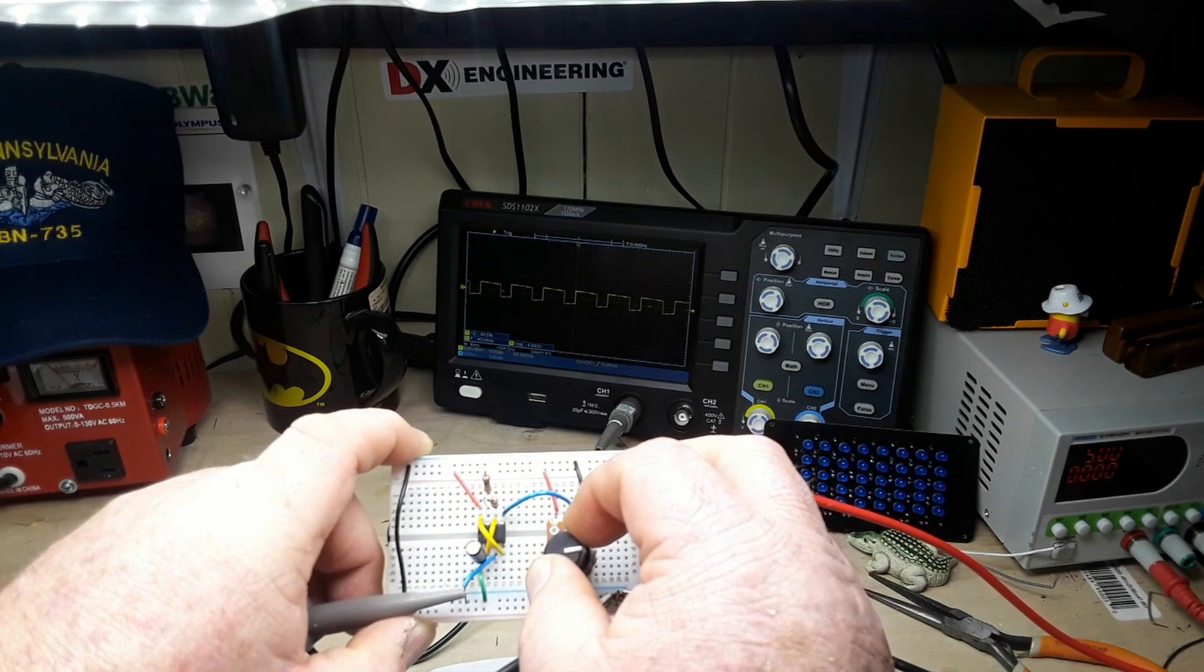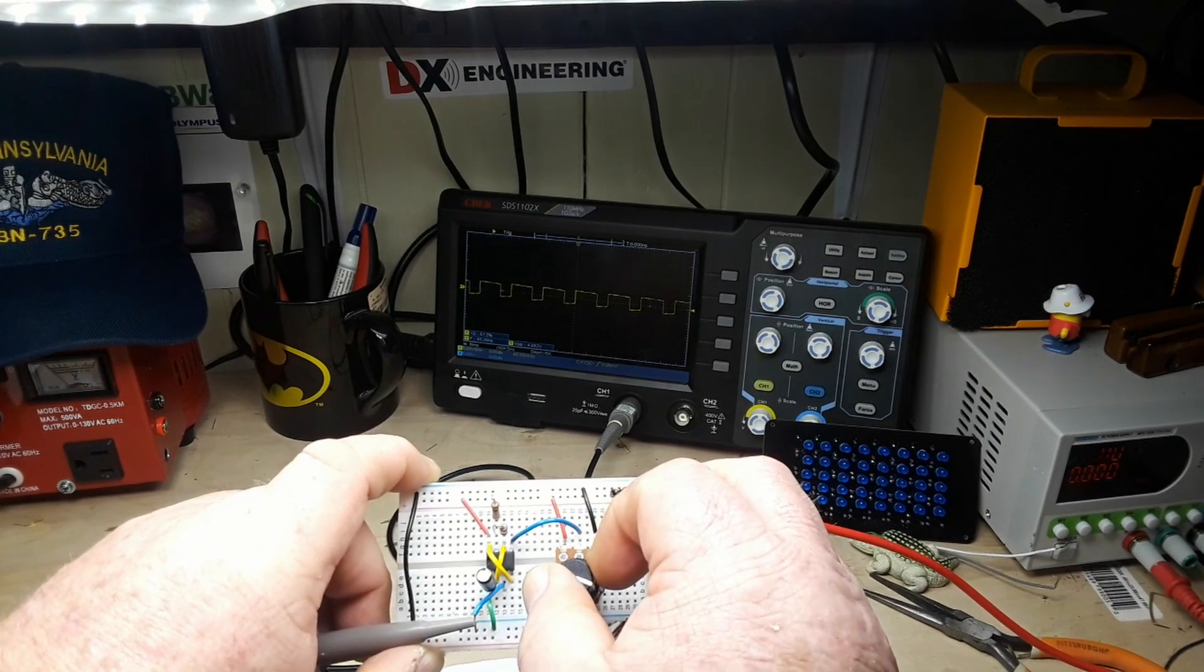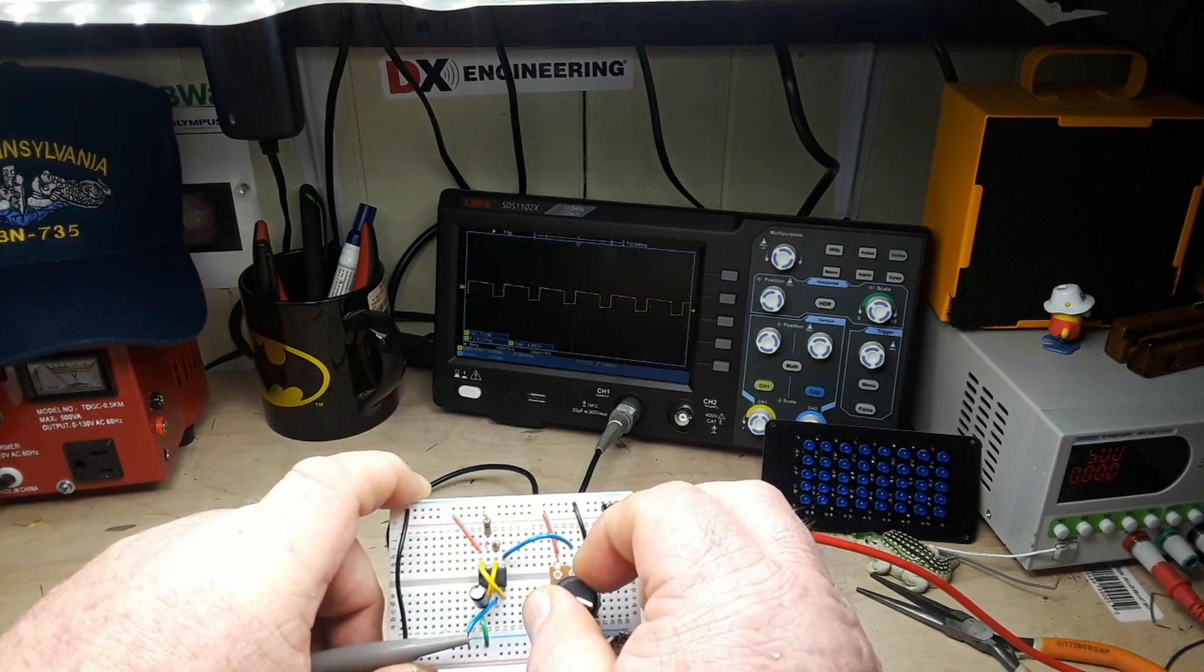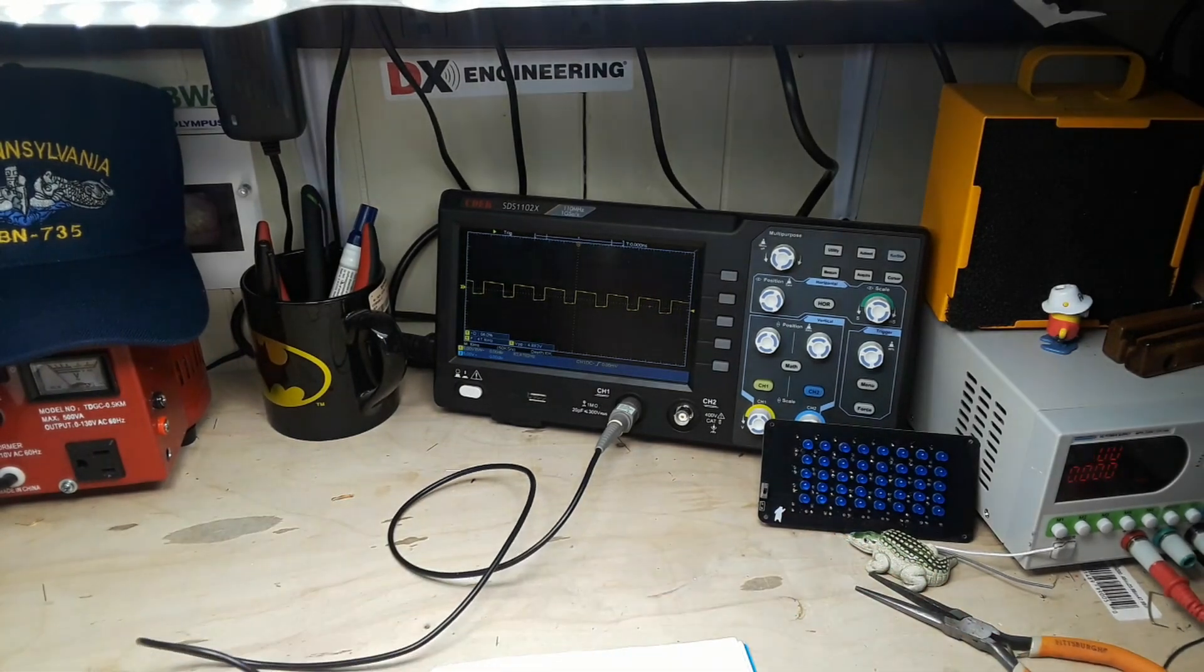So pin 5 in the 555 timer is what is known as the control voltage pin. Let's take a little better look at that.